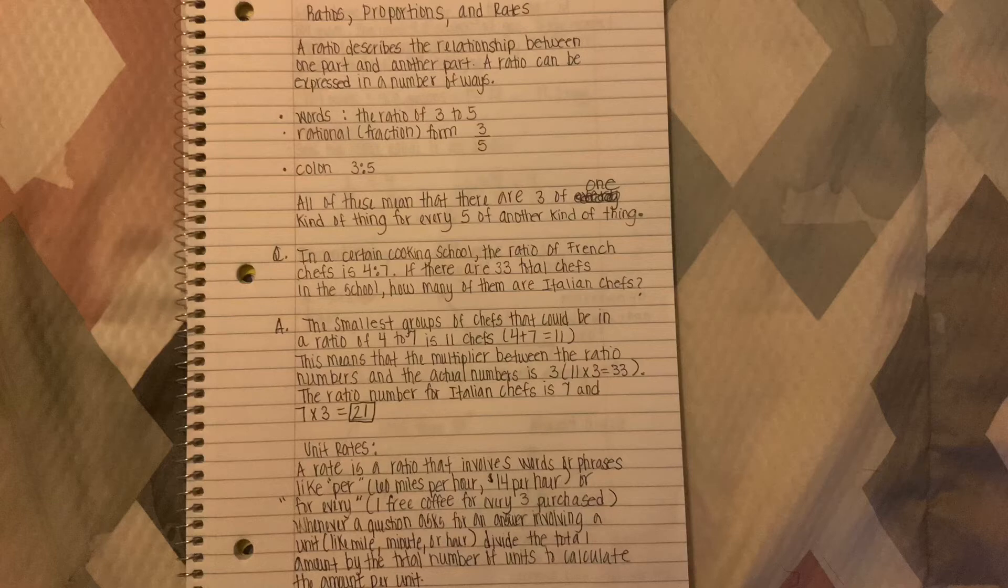Moving on to unit rates. A rate is a ratio that involves words or phrases like per: 60 miles per hour, 14 dollars per hour, or for every. Whenever a question asks for an answer involving a unit like mile, minute, or hour, divide the total amount by the total number of units to calculate the amount per unit.